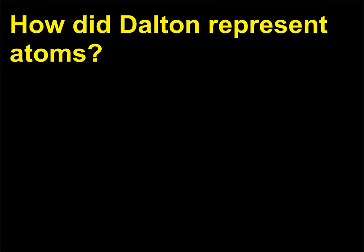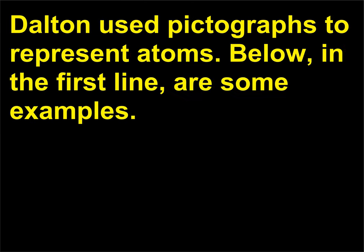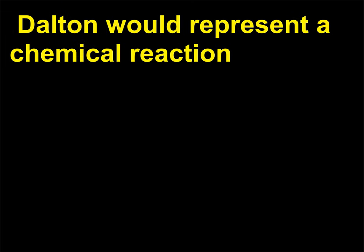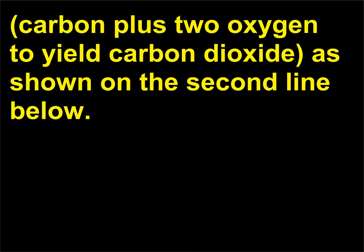How did Dalton represent atoms? Dalton used pictographs to represent atoms. Below, in the first line, are some examples. Dalton would represent a chemical reaction, carbon plus 2 oxygen to yield carbon dioxide, as shown on the second line below.